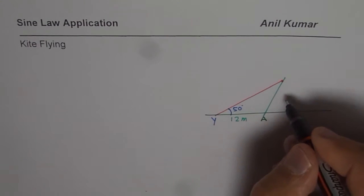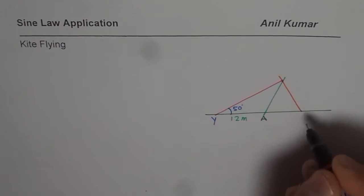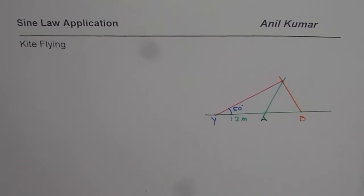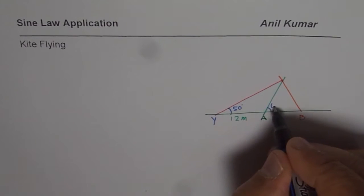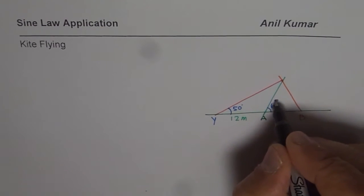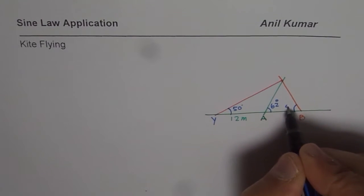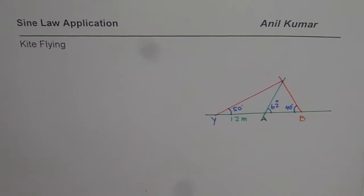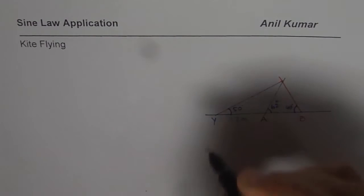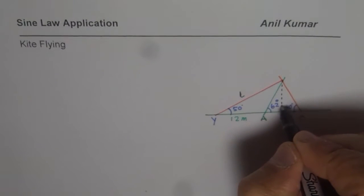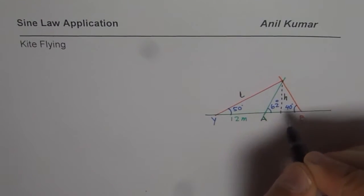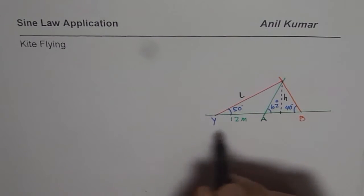Let's say that is the second friend B. Friend A has an angle of elevation of around 62 degrees, and friend B has an angle of elevation of 40 degrees. In this situation, what you need to find is the length of this string L, and the height of your kite H.